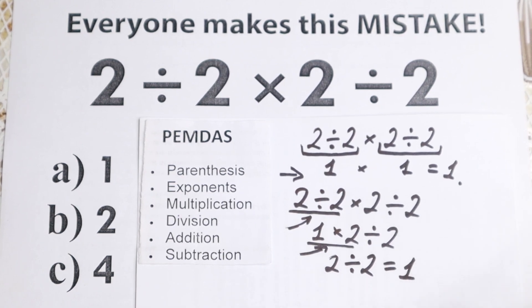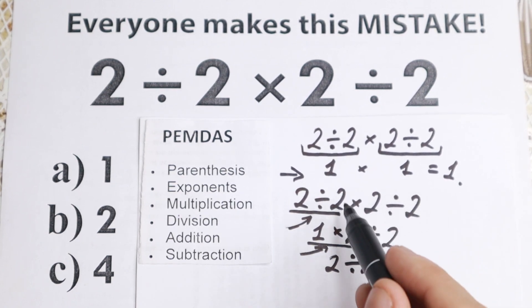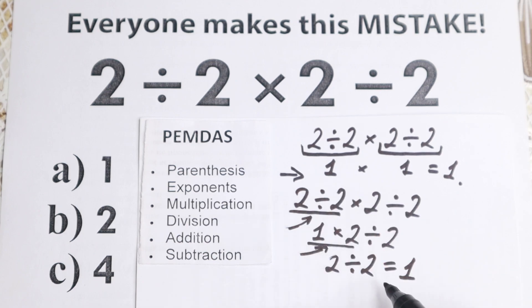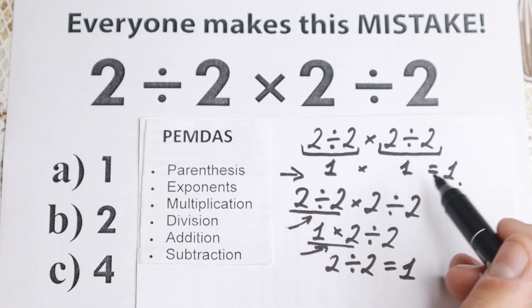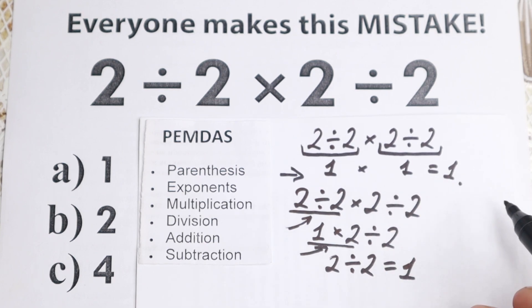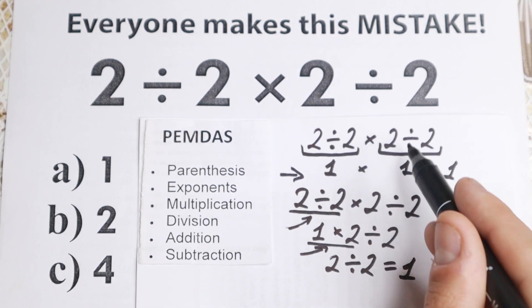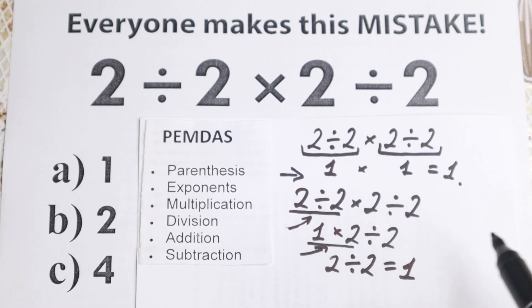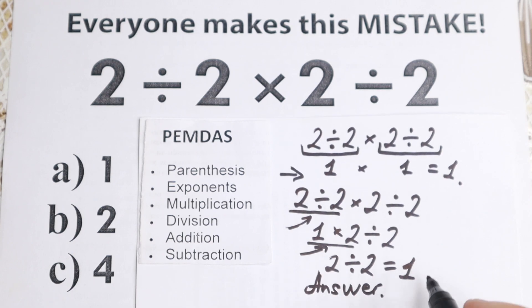So as you can see, really interesting tricky moment right here, because this is a correct explanation, a correct solution to this problem. And we will have 1. And this is a wrong approach to this problem, but the answer is the same. So really tricky question. If you're interested in answering, you can use both methods, but this is absolutely wrong method. And this is a correct explanation and a correct answer to this problem. So according to PEMDAS, answer, this is option A, 1.